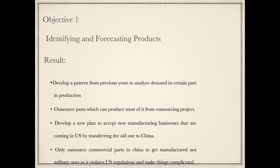Objective 1 - Identifying and Forecasting Products: Develop a pattern from previous years to analyze demand for certain parts in production. Outsource parts which can produce the most value from outsourcing. Develop a new plan to accept new manufacturing businesses coming into the US by transferring old ones to China. Only outsource commercial parts to China, not military ones, as it violates US regulations and makes things complicated.